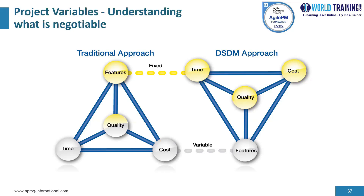In the DSDM approach, which is an agile project management approach, time and cost are fixed, whereas contingency or flexibility is built into the requirements — you don't get to do everything. A useful quote from a customer of one of the very first DSDM projects ever run was: 'We got less than we asked for, but more than we expected, because we got exactly what we wanted.'